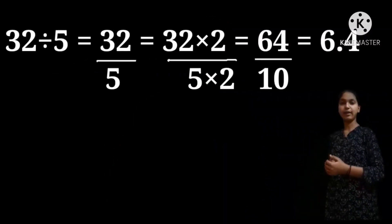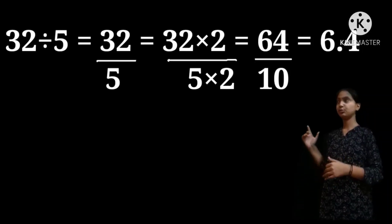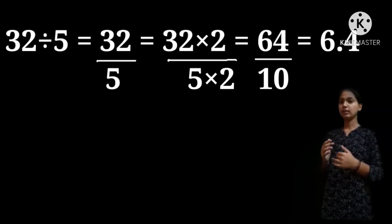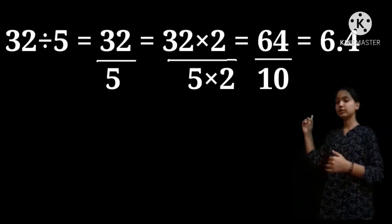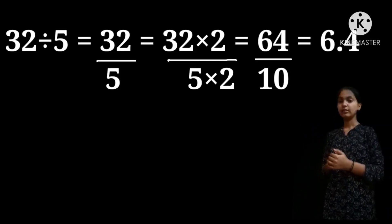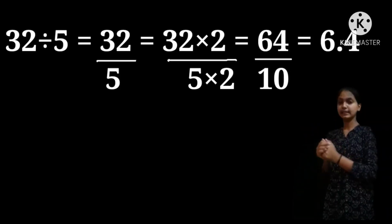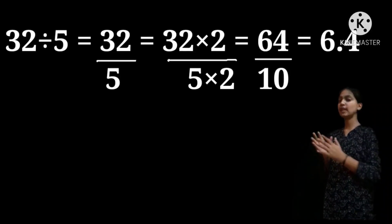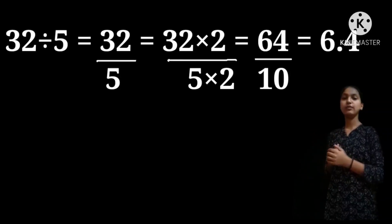First, we will learn about dividing any number by 5. Just look at the examples here. 32 divided by 5 — we can write this as 32 by 5. We should multiply 2 to the numerator and the denominator. So 32 into 2, divided by 5 into 2. Let us multiply: 32 into 2 is 64, and 5 into 2 is 10. So 64 by 10. Let us divide this. The answer is 6.4.